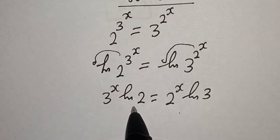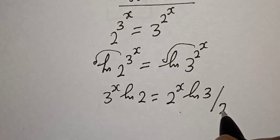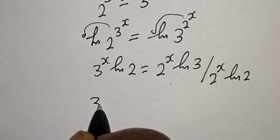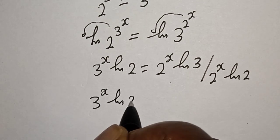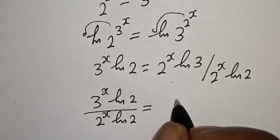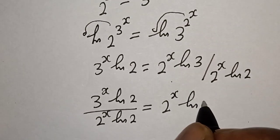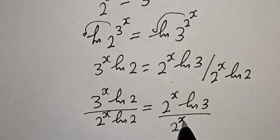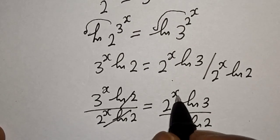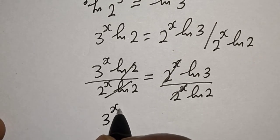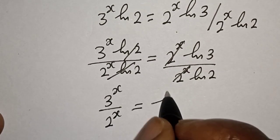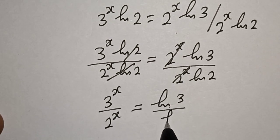Then let's divide both sides by 2 raised to power s times natural log 2. We get 3 raised to power s times natural log 2 over 2 raised to power s times natural log 2, equal to 2 raised to power s times natural log 3 over 2 raised to power s times natural log 2. The 2 raised to power s terms cancel, and natural log 2 cancels, giving us 3 raised to power s divided by 2 raised to power s is equal to natural log 3 over natural log 2.